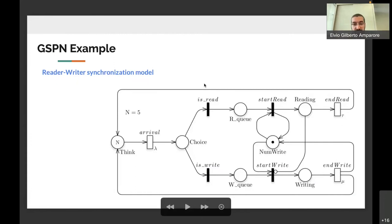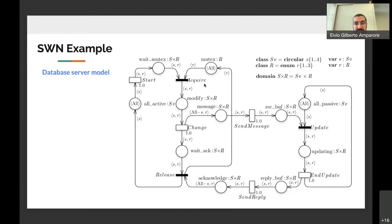This is an example of an SWN model, which is an extension of the GSPN in which now we have a type system made by elementary color classes and Cartesian domains of classes. All places may belong to one of these types, and then we have tokens that now have a color, and we have colored functions that label the arcs that represent how the color tokens flow around the net.